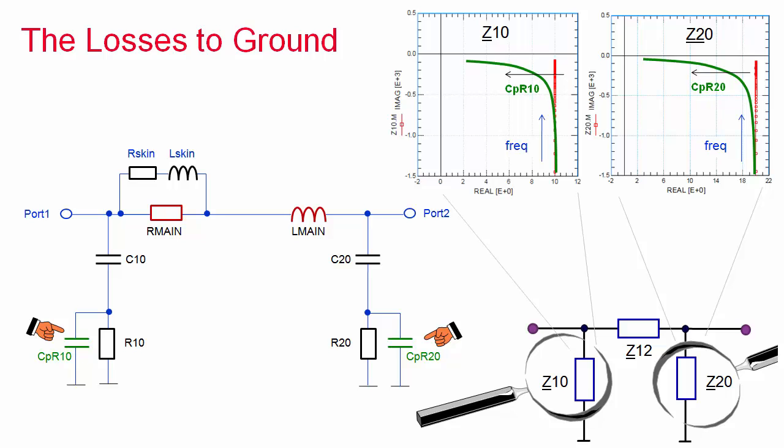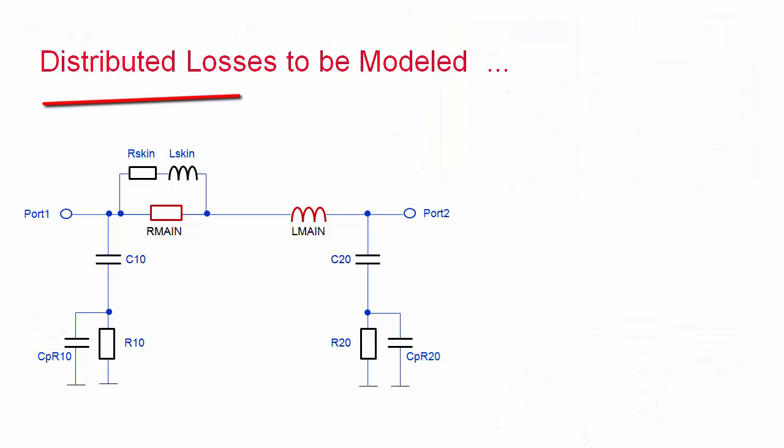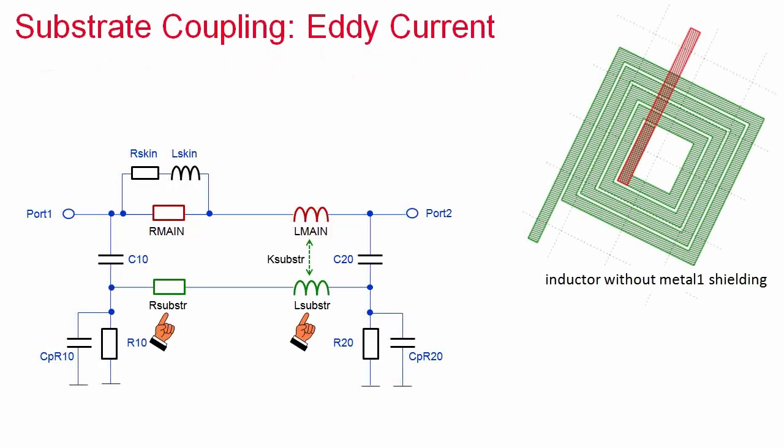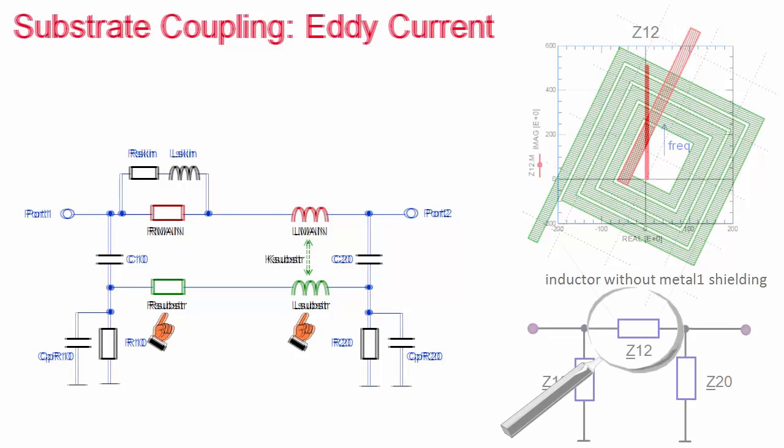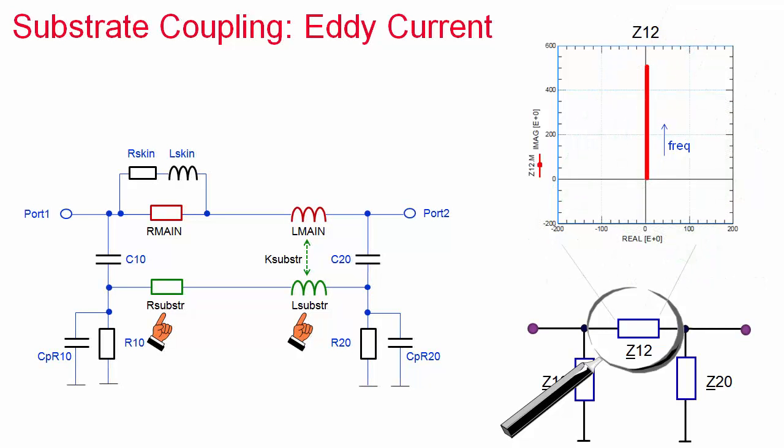Let's now start the discussion of the third part of an inductor modeling, the modeling of distributed effects. As mentioned at the beginning, we will consider two cases: inductive coupling into the substrate, the eddy current, and also losses towards a metal one shielding. We begin with the eddy current, represented by the SPICE components R substrate and the coupled inductor L substrate. A Z12 impedance trace going continuously into the negative resistance plane is an indication for this eddy effect.